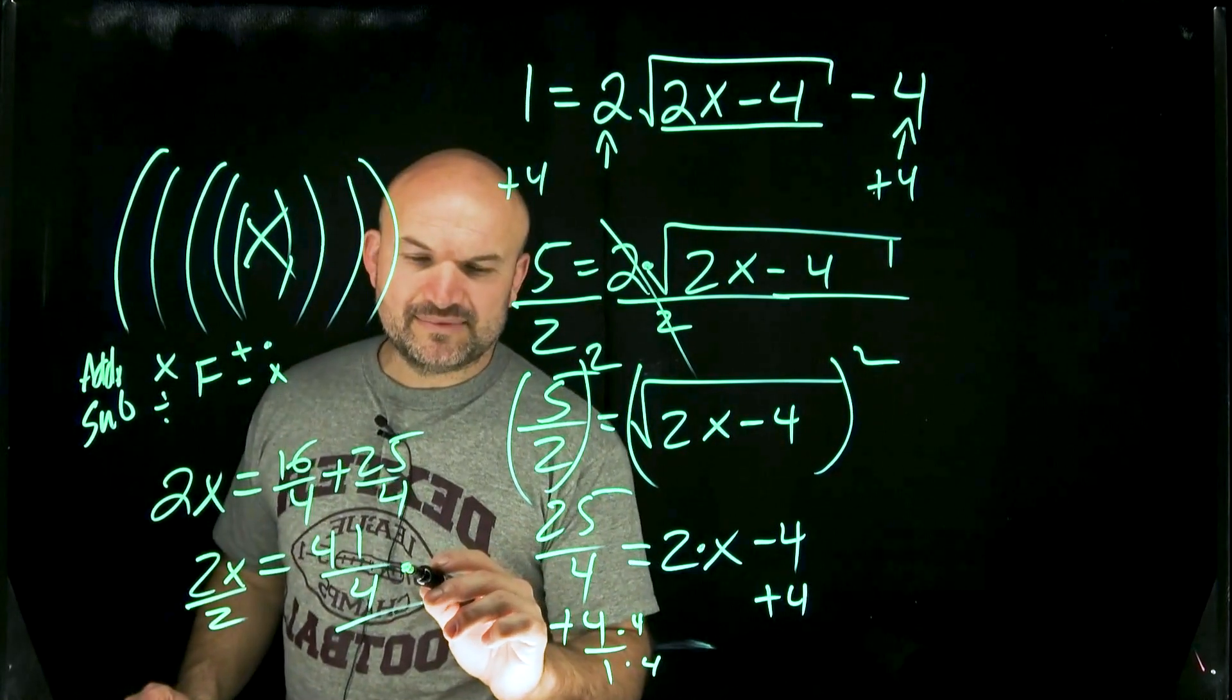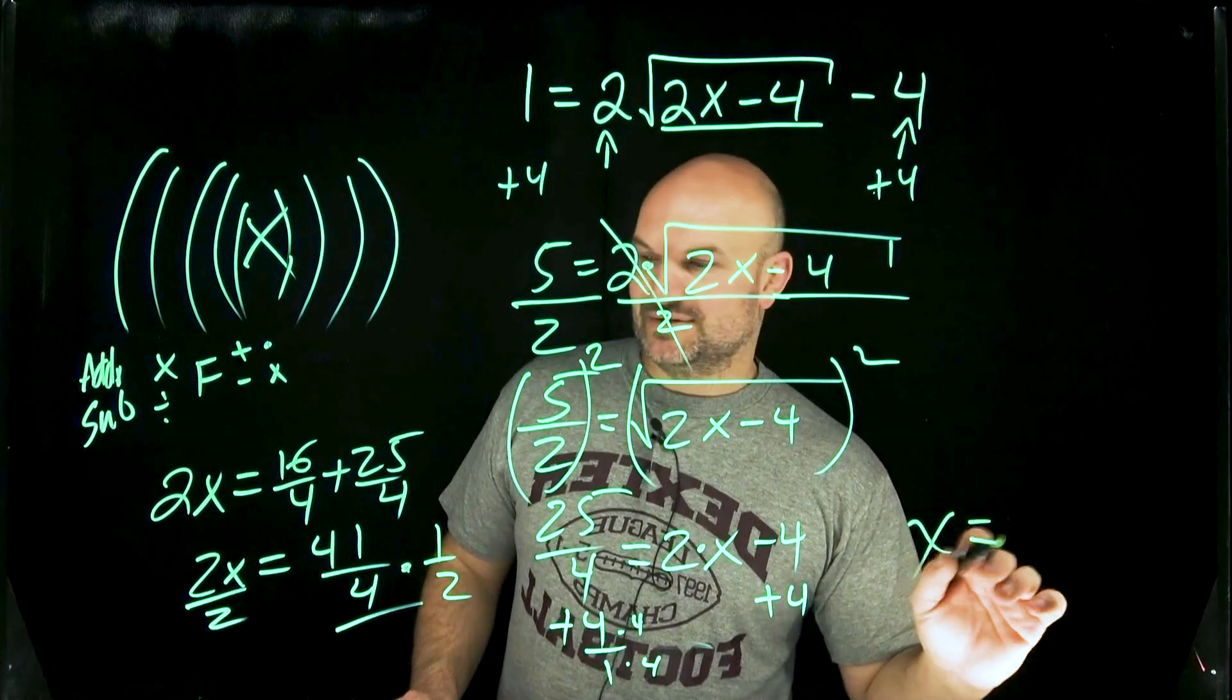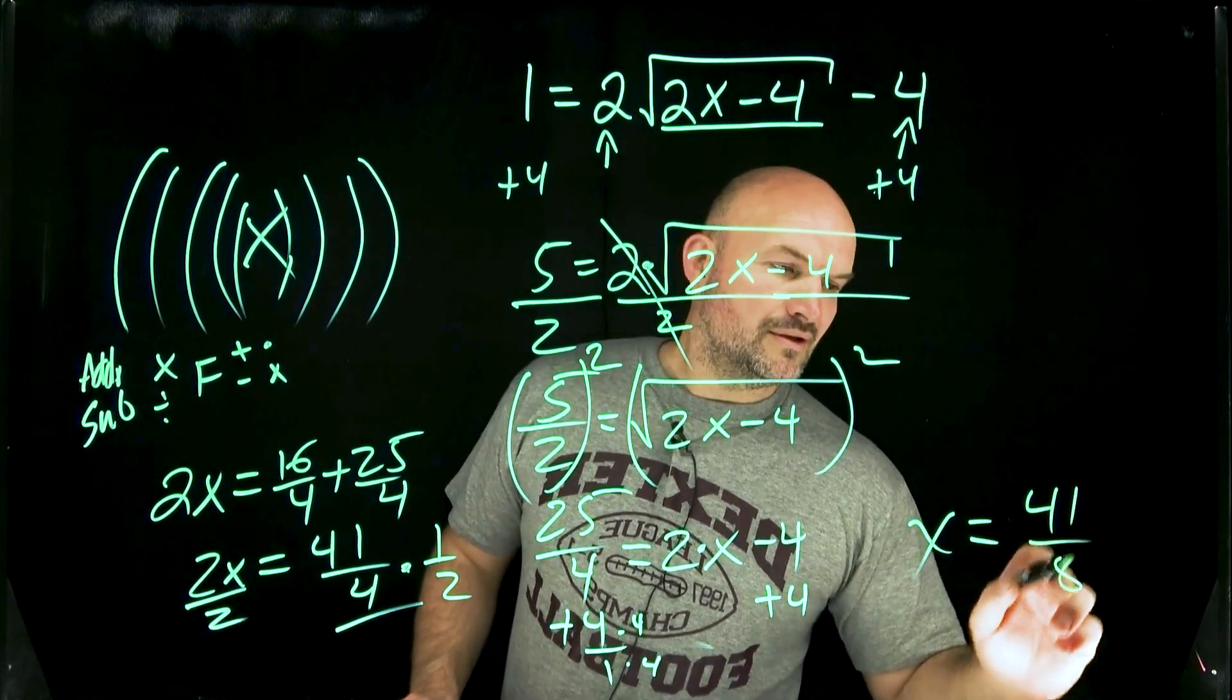Now I can undo my multiplication by dividing by 2. And remember, dividing by 2 is the same thing as multiplying by 1 half. So therefore, I have x is going to equal 41 over 8.